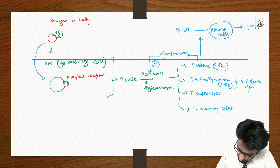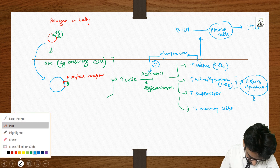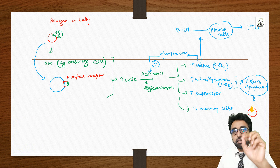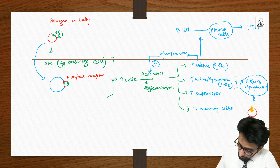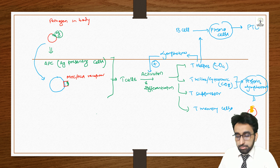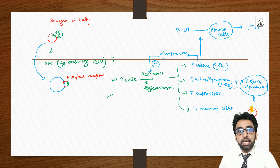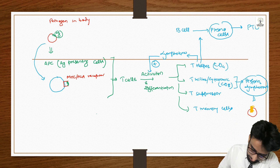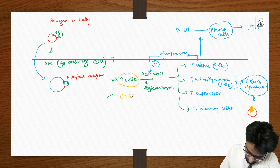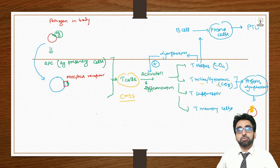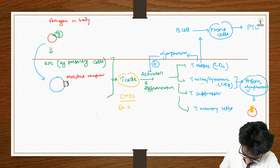Cytotoxic T-cells produce perforins and lymphotoxins. They go directly to the pathogen, perforate its membrane, causing water to move out and the cell to die. This is how cytotoxic cells directly kill harmful cells or organisms. This method is known as CMI — cell-mediated immune system — because the cells directly kill the pathogen. About 70 percent of the immune system is made from CMI.